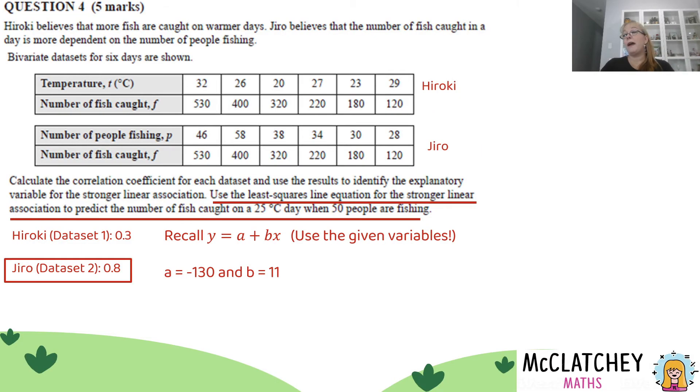You'd recall that Y equals A plus BX. But you're going to use the variables that they've given us for Jiro, P and F. So we're actually going to replace this X with a P and the Y with an F when we come up with our equation. That's important. If you don't use the variables that they provide you, you may not get the full mark. So be very careful that you use P and F. Therefore, F, which replaced the Y, equals A minus 30 plus 11P, which replaced our X value.